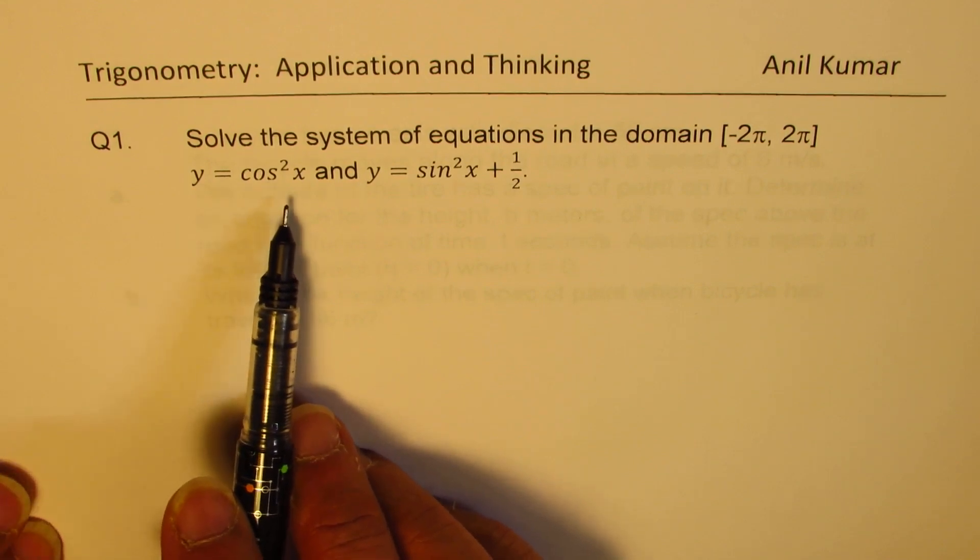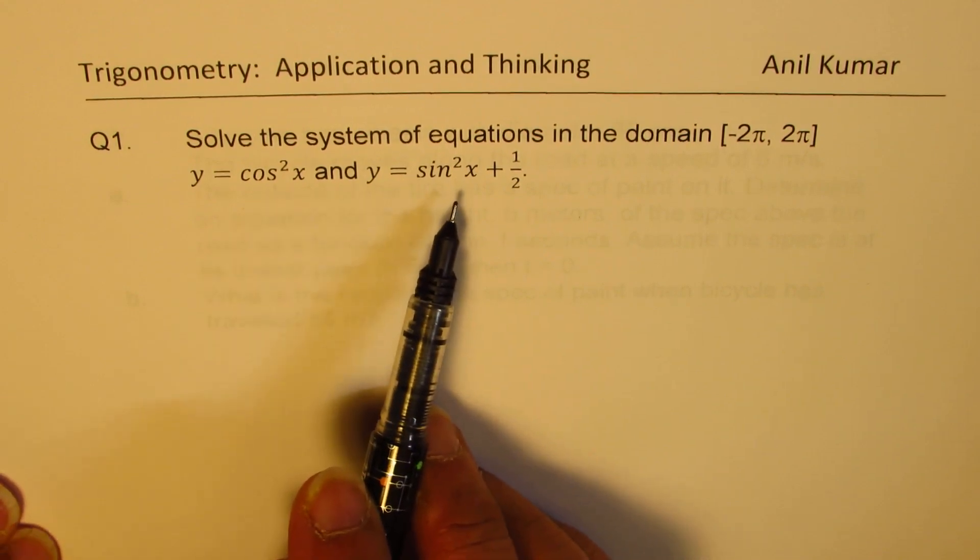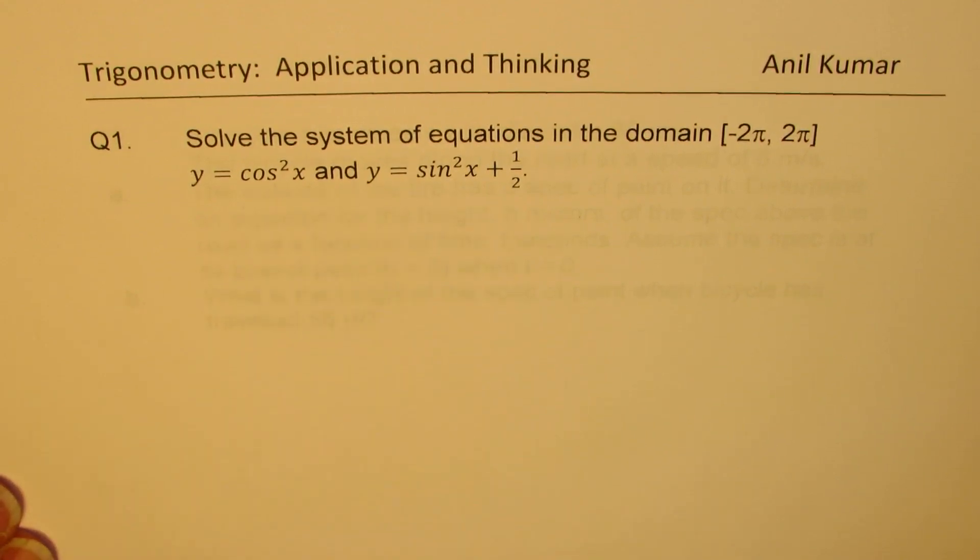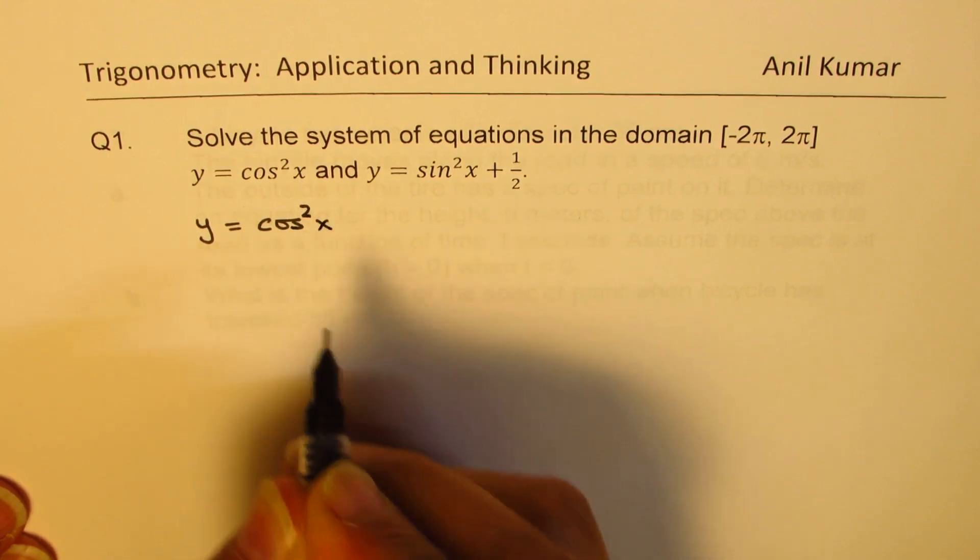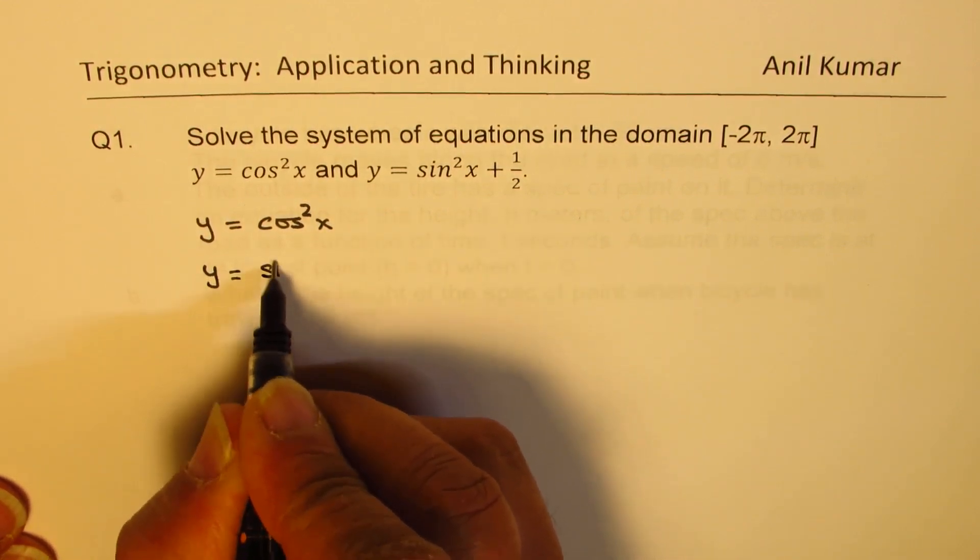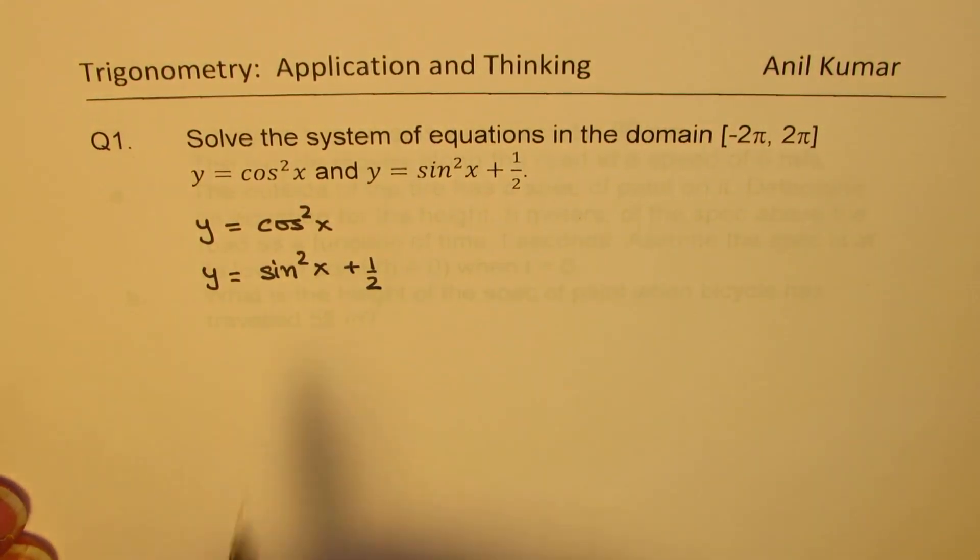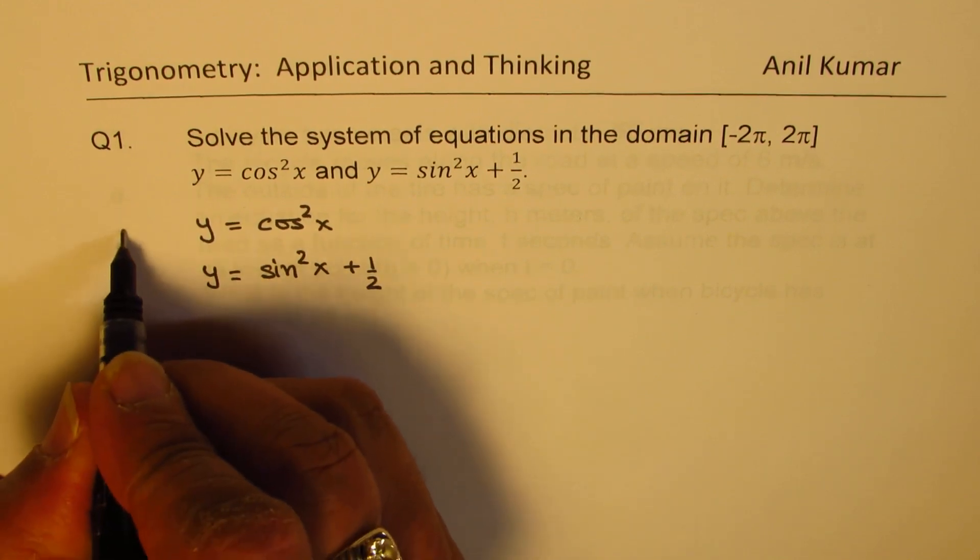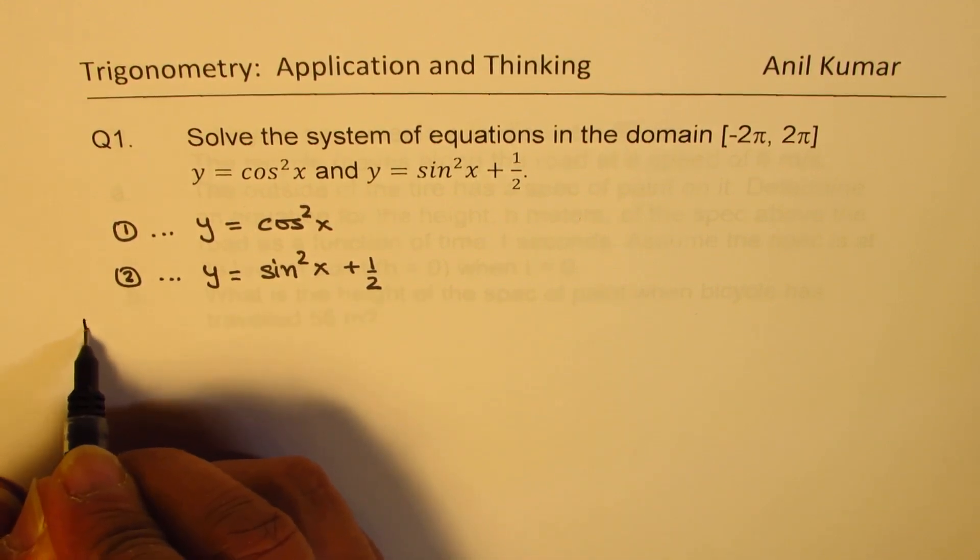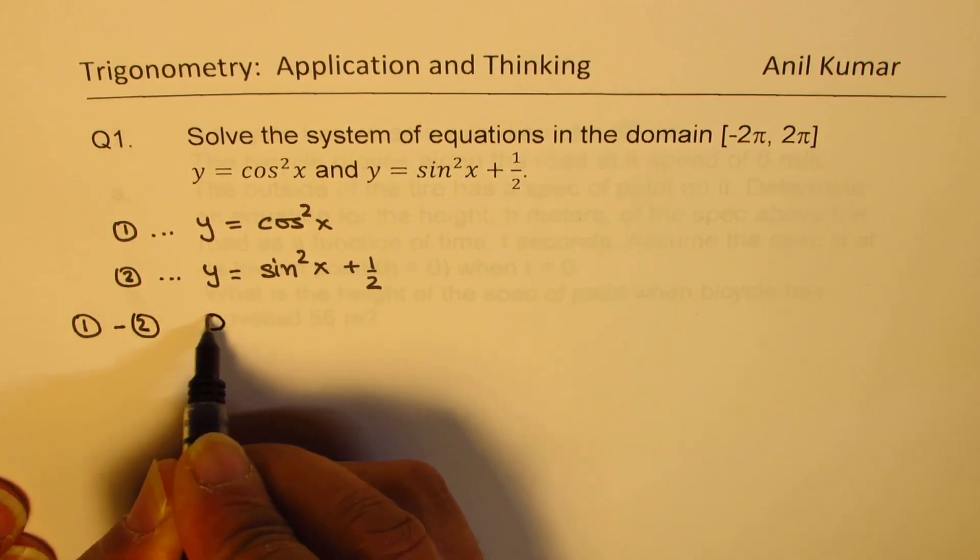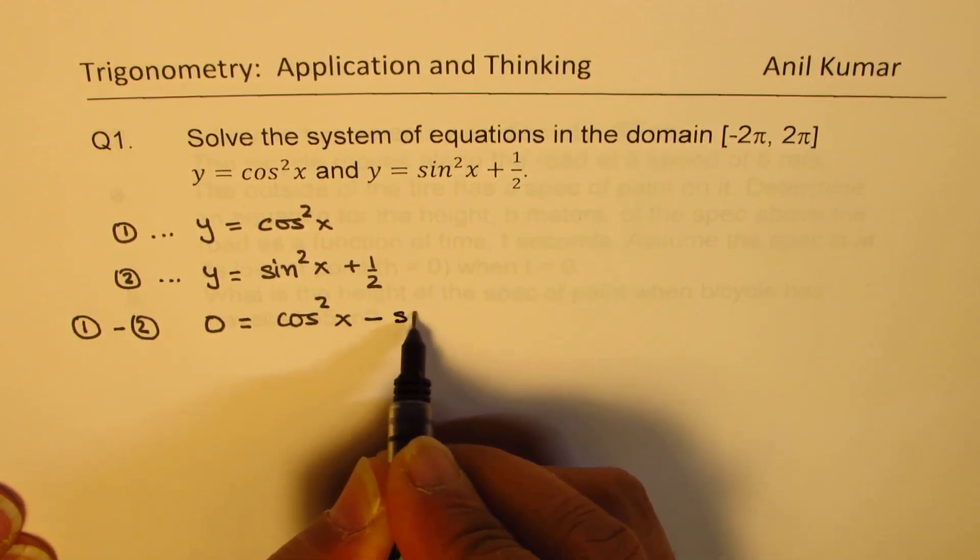The equation is y equals cos squared x and y equals sine squared x plus half. We'll do it algebraically. We are given two equations: y equals cos squared x and y equals sine squared x plus half. What we can do here is subtract one from the other. Let's say this is equation number one and that is equation number two. If I do equation one minus equation two, I get zero equals cos squared x minus sine squared x and that also becomes minus half.